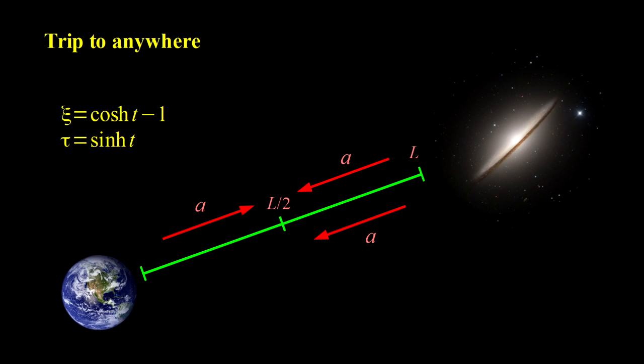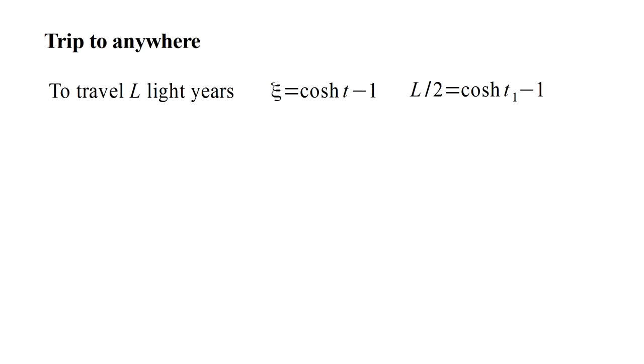The four phases are symmetric with respect to distance traveled and elapsed time. So, therefore, we can find the time for the first phase and multiply by two for the one-way time or by four for the round-trip time. Therefore, to travel l light years, you find time t1 such that coche t1 minus one equals l over two. And you've got your one-way and round-trip times then. For example, say we wanted to travel to the Andromeda galaxy, a distance of about two and a half million light years.